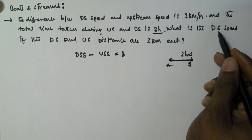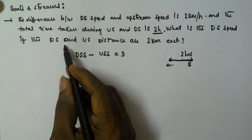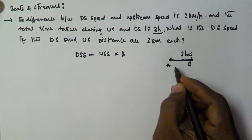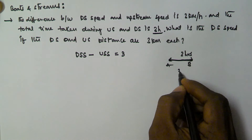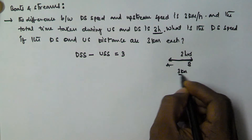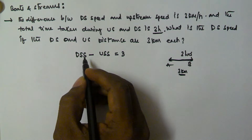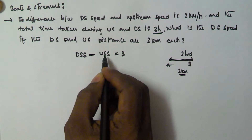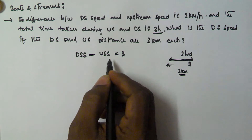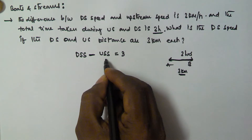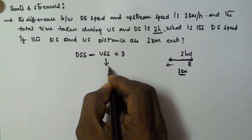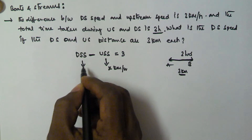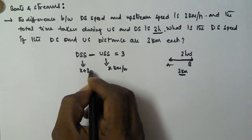The downstream and upstream distances are 3 km each — that means the A to B distance is 3 km. So we take the upstream speed as x km per hour, and then the downstream speed is going to be equal to x plus 3 km per hour.